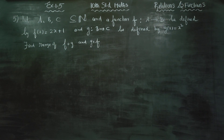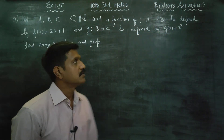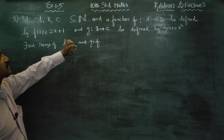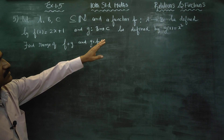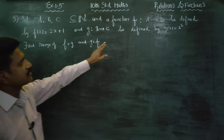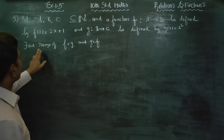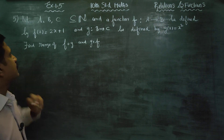Dear 10th standard students, I am Mitro Karnagaran. In exercise number 1.5, sum number 5, if the sets A, B, C are subsets of natural numbers, and a function A to B be defined by F, and B to C be defined by G, find the range of F dot G and G dot F.